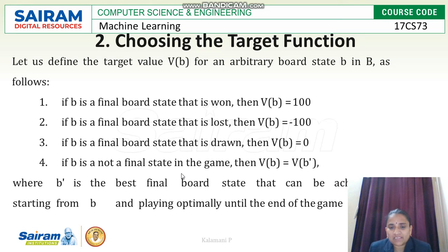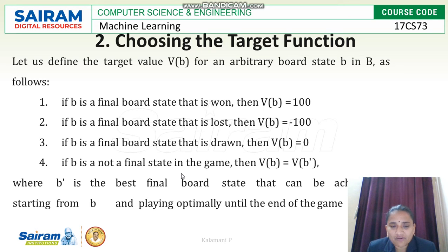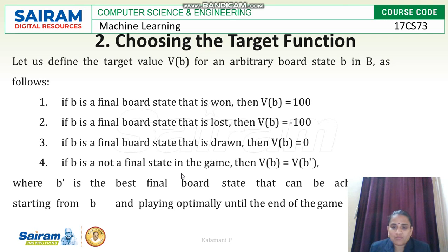If B is not a final state in the game, we move to the next legal state, called B'. Then V(B') is taken as V(B). B' is the best final board state reachable from B, playing optimally until the end of the game. Until the final state is reached, V(B) is assigned from V(B') and so on.